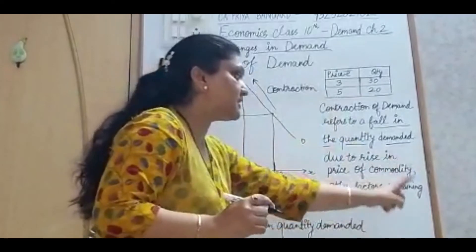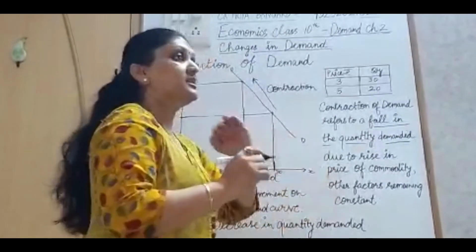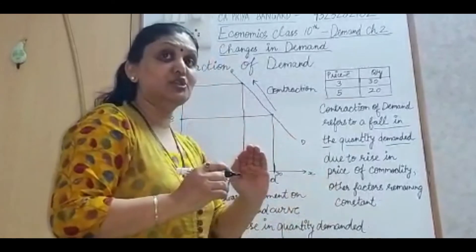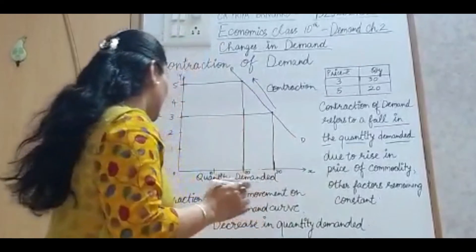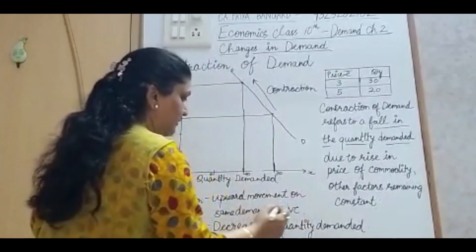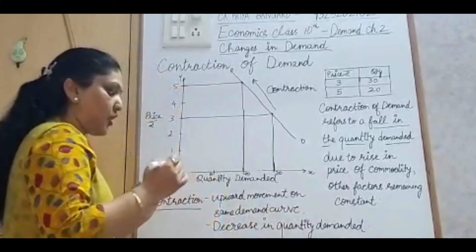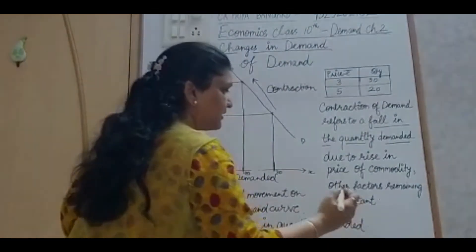Other factors remaining constant. It is very important to write this because the income of the consumer, the taste and preference of the consumer, everything is constant. So contraction is the upward movement on the same demand curve and it is also called as decrease in quantity demanded.